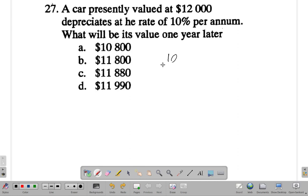10 per - per means divide. 100 means 100. Of means multiply.